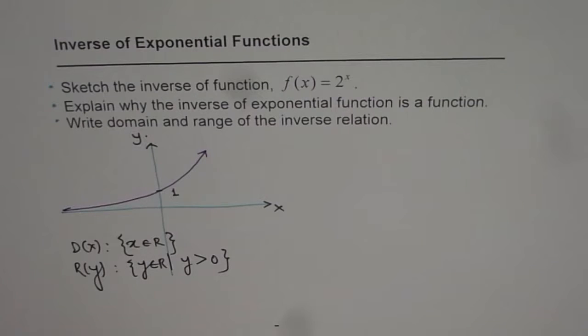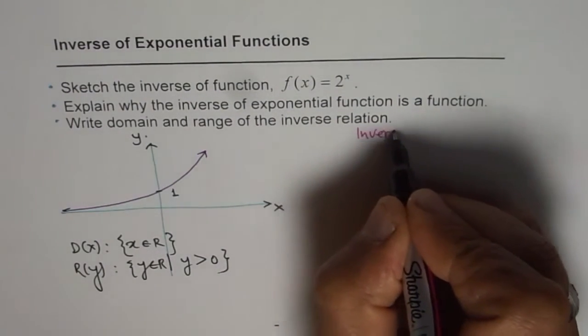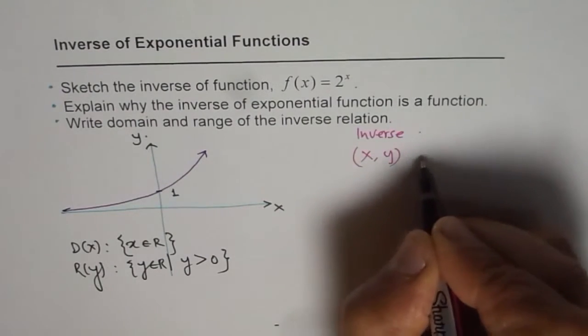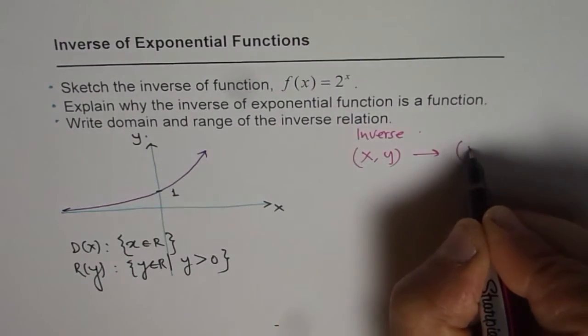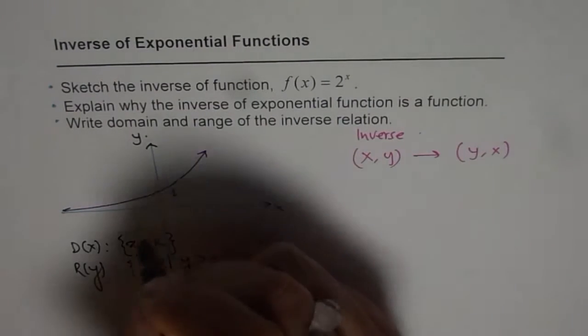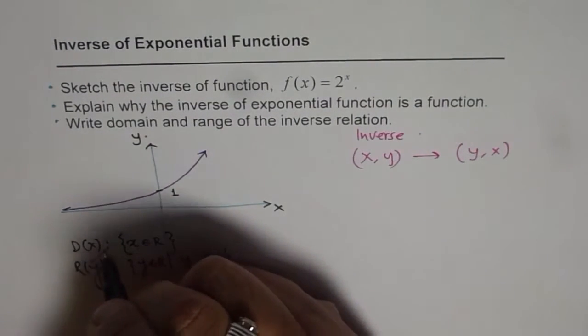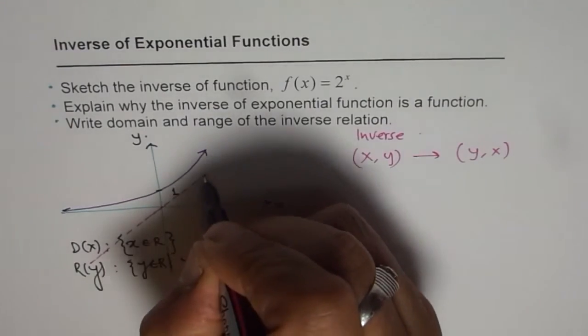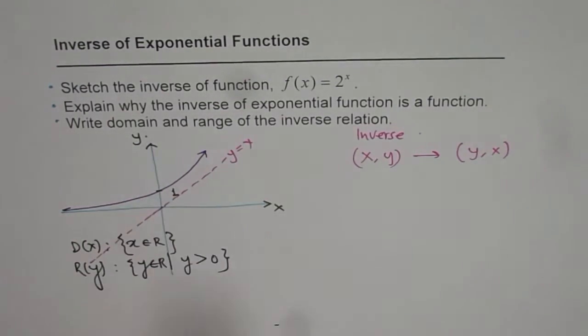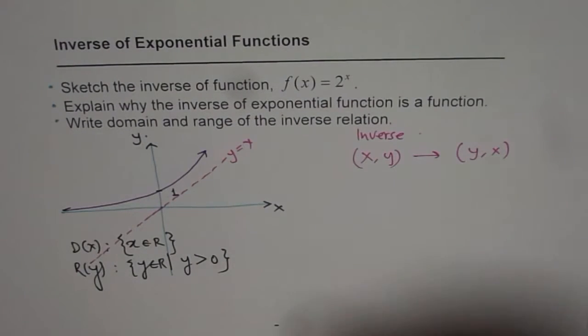Now if I have to sketch the inverse of this function, what happens? In the inverse, if x and y are our coordinate points, they flip—it becomes y and x. You could actually sketch it on the same graph. If I draw a line y = x and reflect it on this line, I will get the inverse of the function.